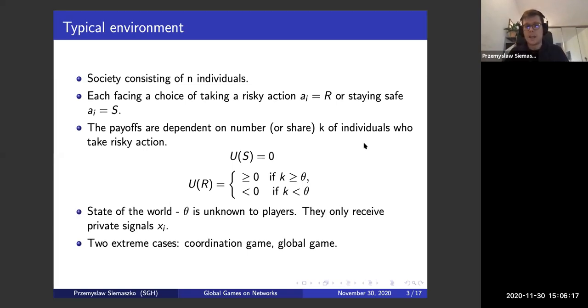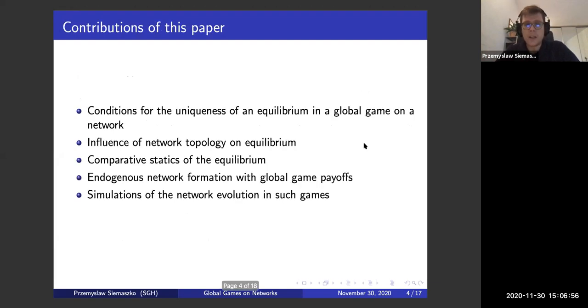Whereas if we go to the protest by ourselves or in a small group, we don't achieve anything and our utility is negative. The issue is the state of the world or how much people we need to engage to achieve our results is unknown to us. Everybody receives only a private signal and then builds some view of the world, some posterior based on that. And there are two extreme cases. If we know the private signals and we know private signals of everyone else in the game, then we have a classic coordination game where we have two equilibria of either doing the risky action or not, which is not that useful.